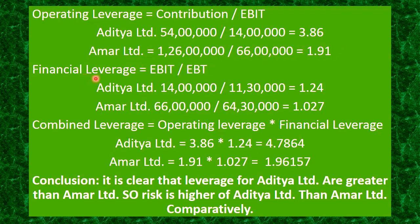Now for financial leverage, the formula is EBIT upon EBT. For Aditya, it is 14 lakhs upon 11 lakhs 30,000, which gives 1.24. For Amar, it is 66 lakhs upon 64 lakhs 30,000, which comes to 1.027. Those are the financial leverages for Aditya and Amar Limited.